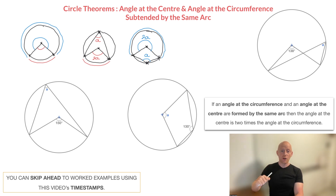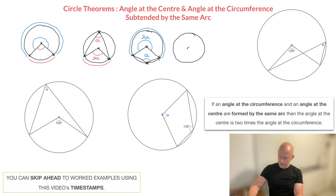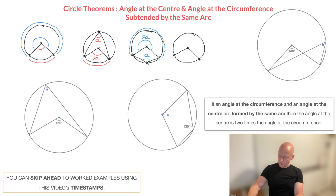One more configuration to show you. Again, I start by drawing a circle, saying that its center is right here. I split the circumference into two arcs by adding two points at the circumference and join those two points to the center of the circle. We now have two angles at the center. I now create an angle at the circumference by placing a third point at the circumference — this time right here — and join this third point to the other two points at the circumference.